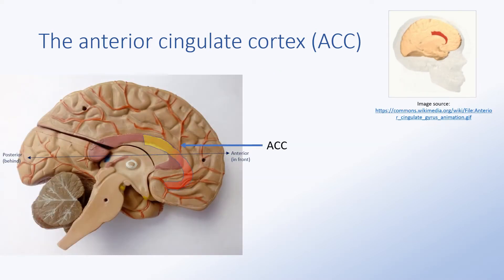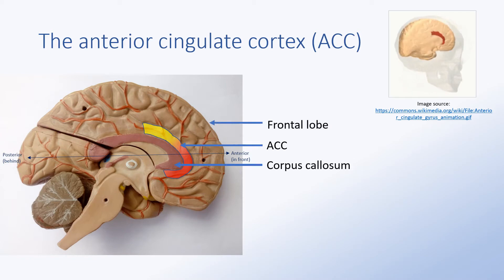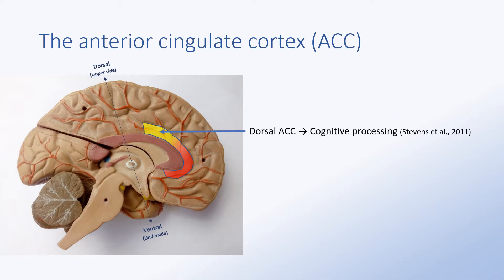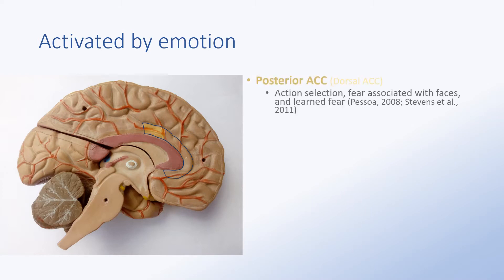Anatomically, the ACC is positioned posterior to the frontal lobe and anterior to the corpus callosum. The ACC is primarily divided into two areas: dorsal, where activation occurs during cognitive processing, and ventral, where activation occurs during emotional regulation. The dorsal and ventral ACC can be further subdivided based on action — the dorsal posterior division responds to action selection, fear associated with faces, and learned fear.